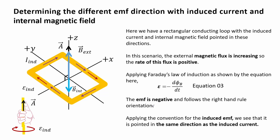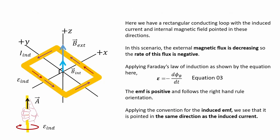Here we have a rectangular conducting loop with the induced current and internal magnetic field. In this scenario the external magnetic flux is increasing so the rate of this flux is positive. Applying Faraday's law of induction, the EMF is negative and follows the right hand rule orientation. Applying the convention for the induced EMF, we see that it is pointed in the same direction as the induced current. In a second scenario where the external magnetic flux is decreasing, the rate is negative, so the EMF is positive and again aligns with the induced current direction.